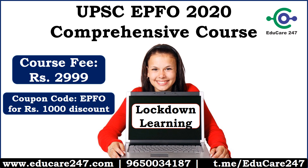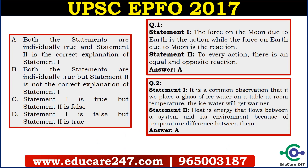In the general science section, questions were asked in a statement-based format. Four options A, B, C, D were given, and in that two statements were provided. You have to find whether the statements are true or not, and whether the second statement is an explanation for the first statement or not. So let's see question number 1.